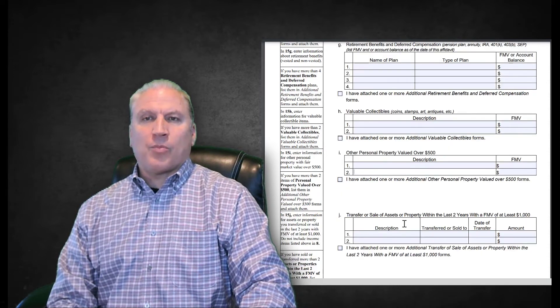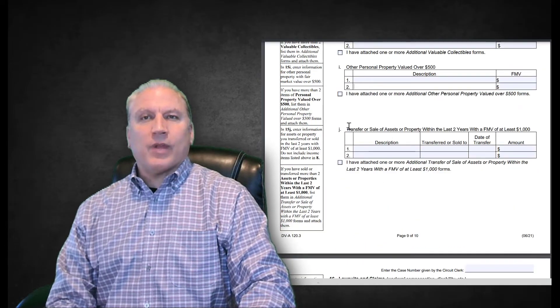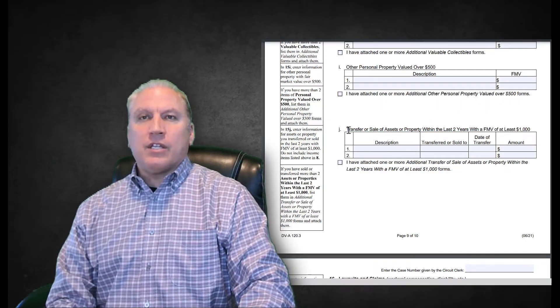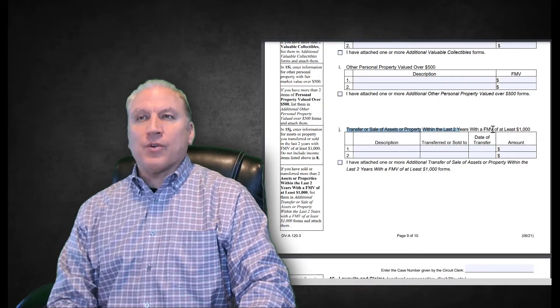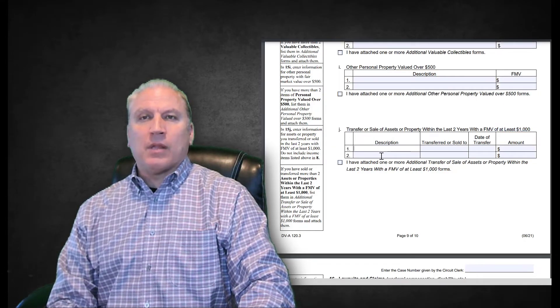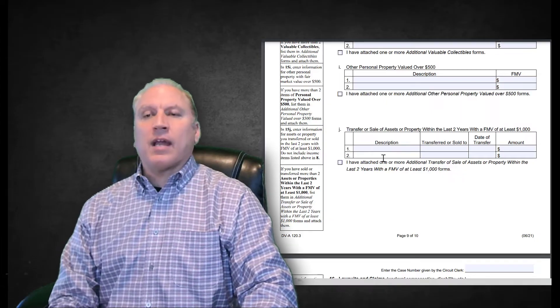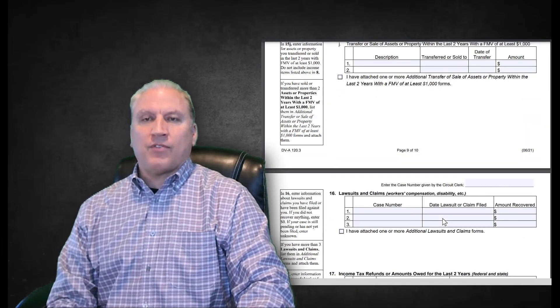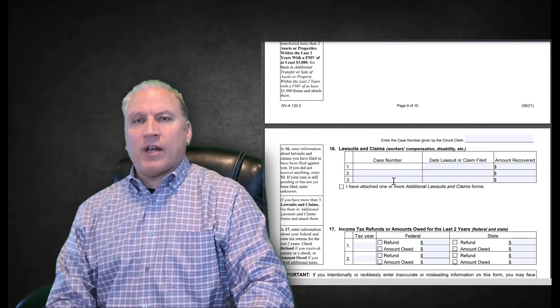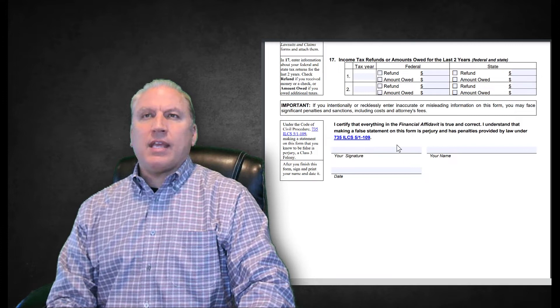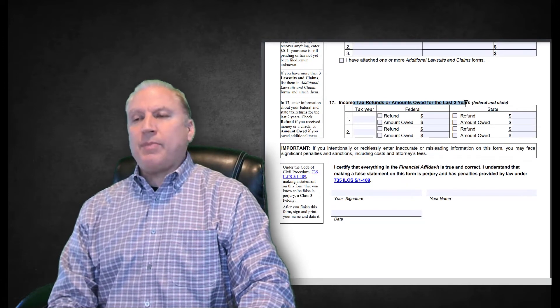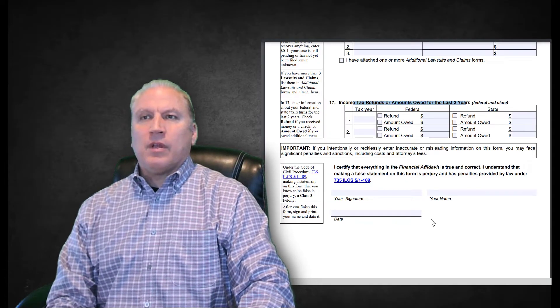Other personal property. Transfer, sale of assets within the last two years—so you have to identify, did you sell any assets within the last two years worth more than $1,000? And you want to verify that. This is where people lie a lot. They put down, 'I didn't sell anything, I didn't give anything away,' but you can find that they did, and there are ways to investigate that. Are there any lawsuits that you have against you or that you filed against somebody else? Do you have any income tax refunds owed, meaning that did you prepay your taxes, do you have money that's owed to you?